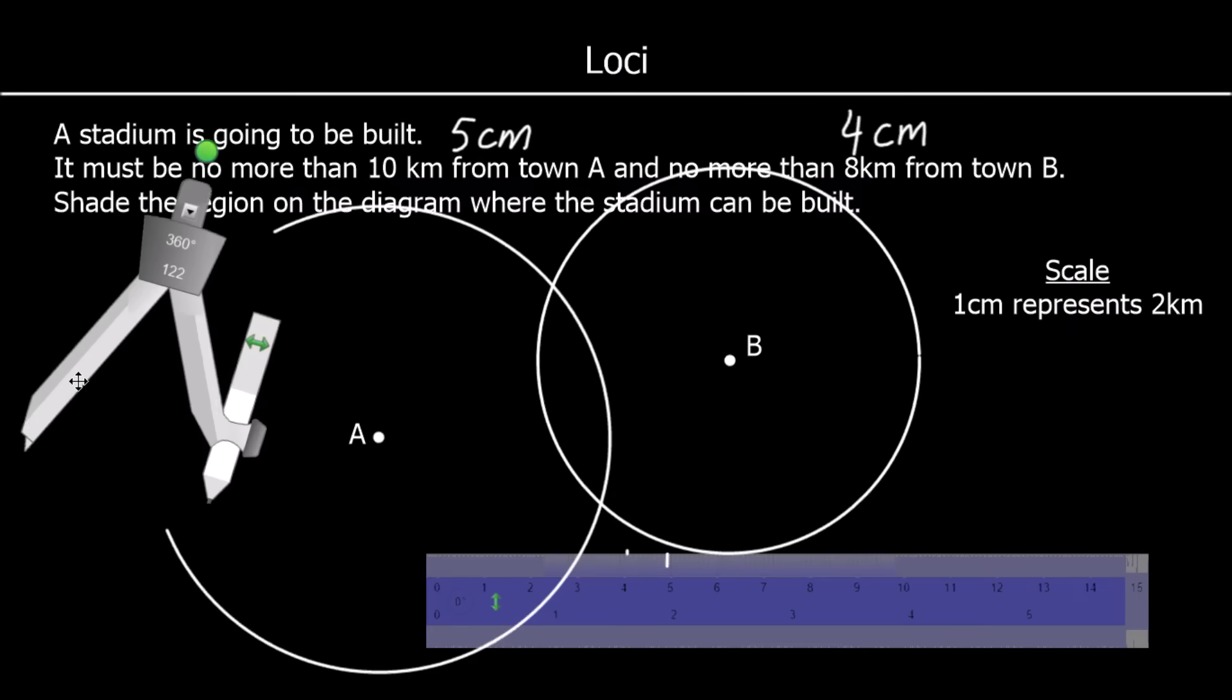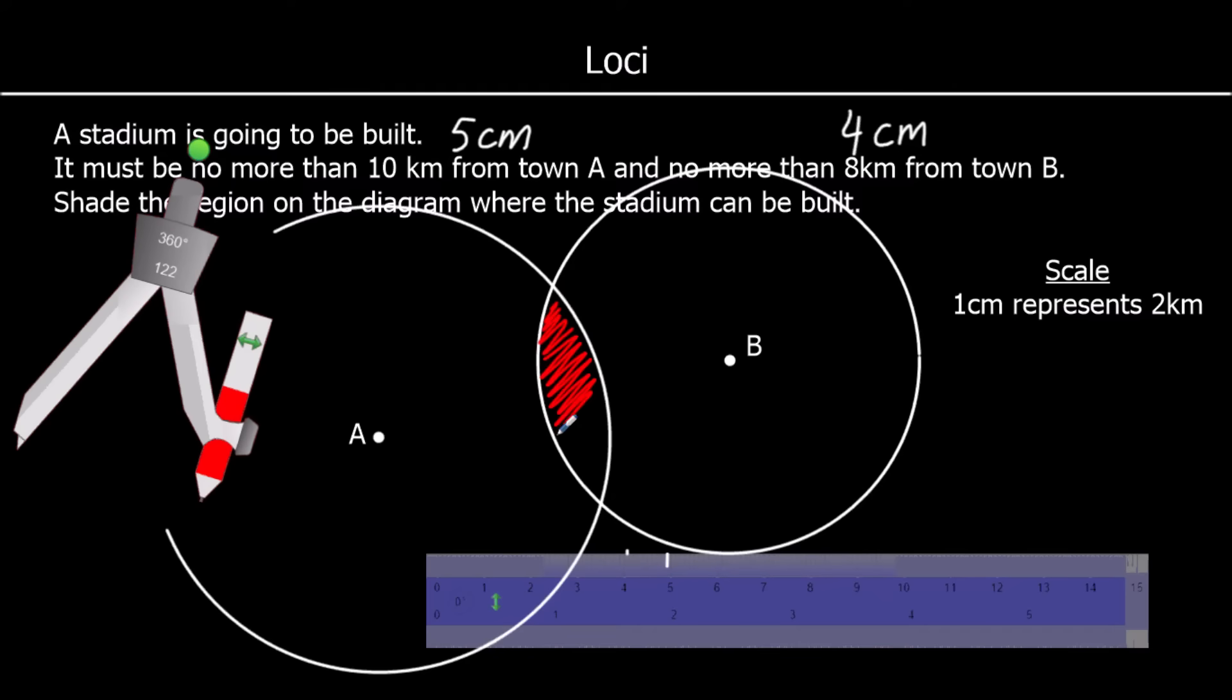So where can the stadium be? It can be in the middle. It has to be less than 5 cm from A, less than 4 cm from B. So the overlap of the two circles is where the stadium can be built.